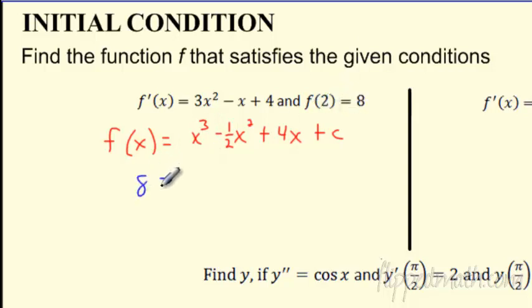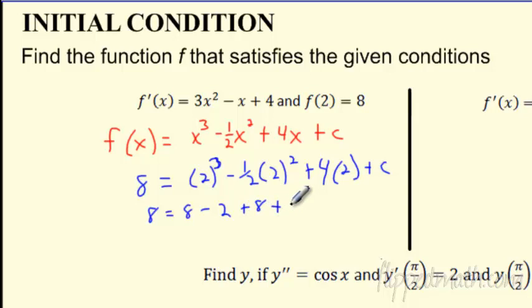Because I know the f of 2 is 8, I can say this is going to equal 8 when x is 2. So you can replace x with 2, and now I can solve this bad boy for c. So let's find this c. I'm going to say 8 equals 2 cubed is 8. 2 times 2 is 4, half of 4 is 2, plus that 8, plus that c. It looks like 8 minus 2 plus 8 is going to be 14. So c's got to be what? Subtract 14 from both sides, c is negative 6.